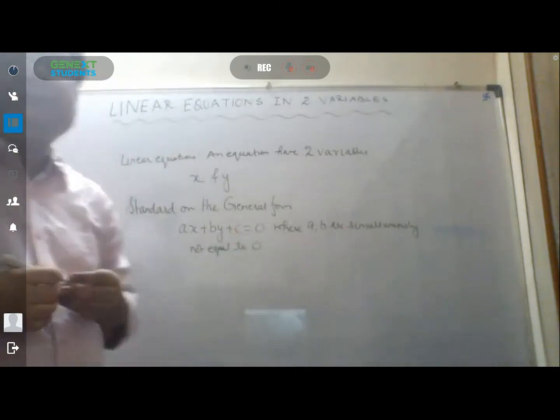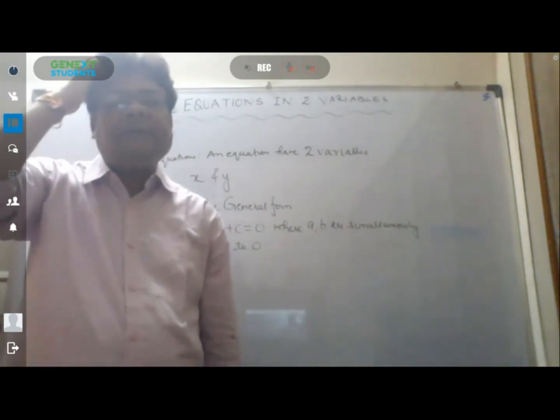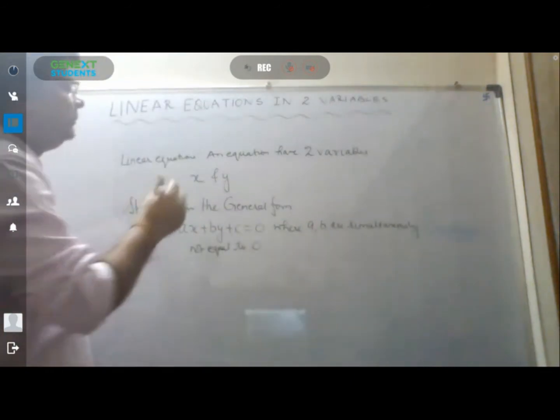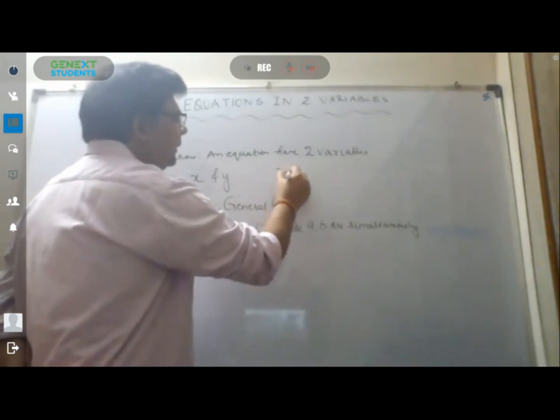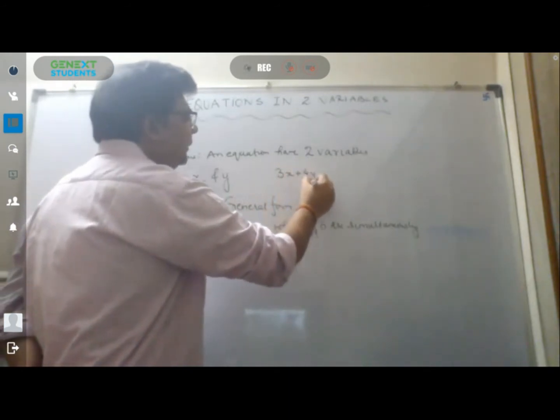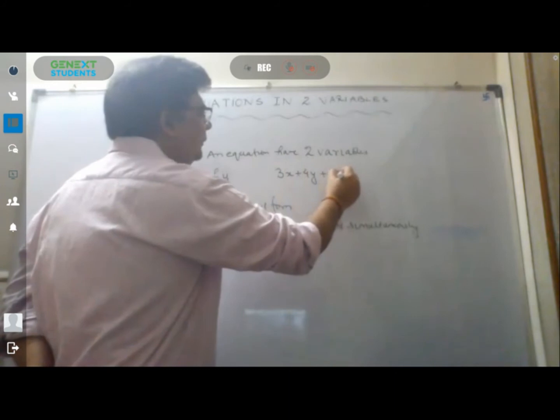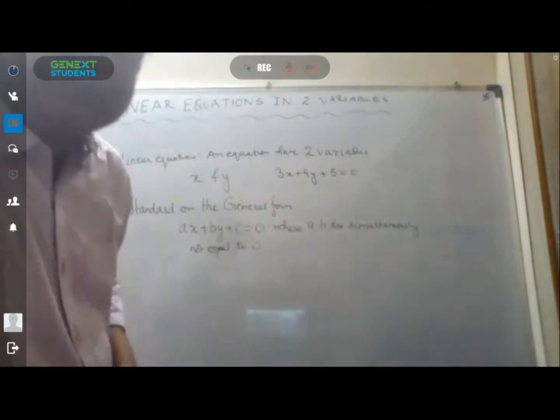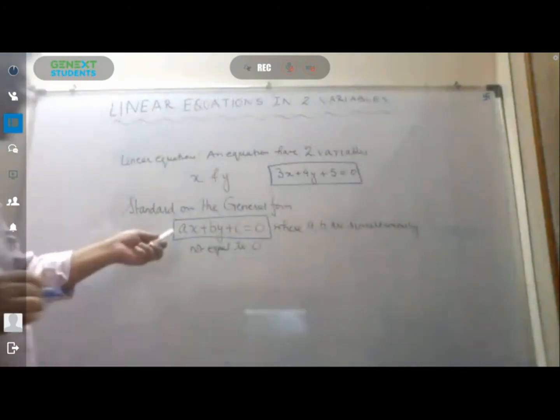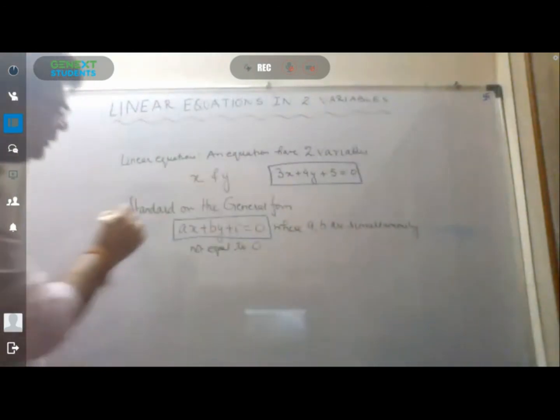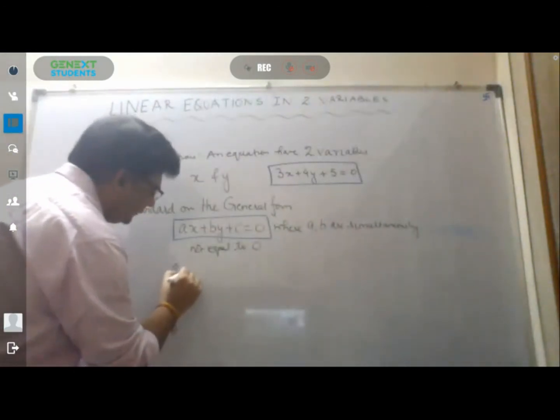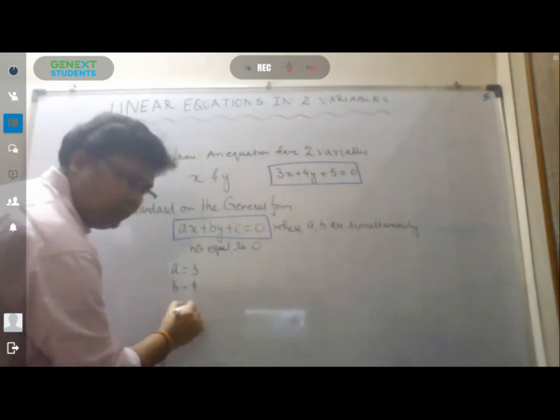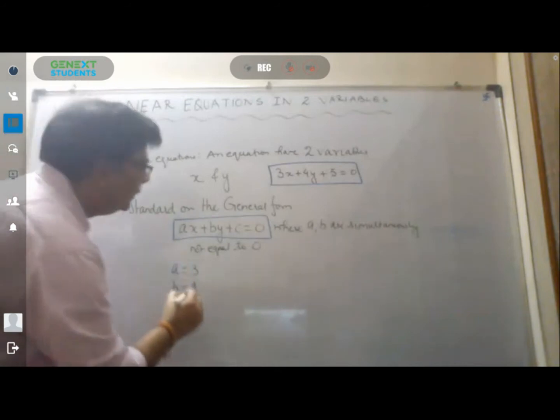What do we mean by this? If we take an equation, for example, 3x plus 4y plus 5 equal to 0. This is an equation in standard form. Here we can say a is equal to 3, b is equal to 4, and c is equal to 5.